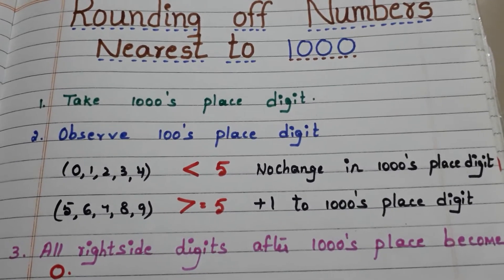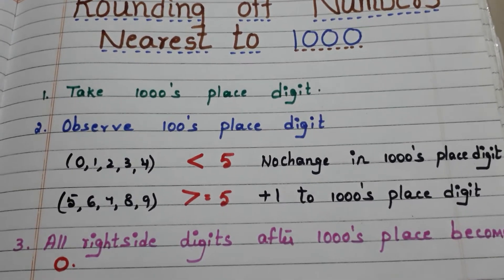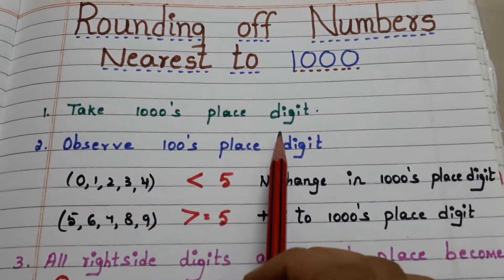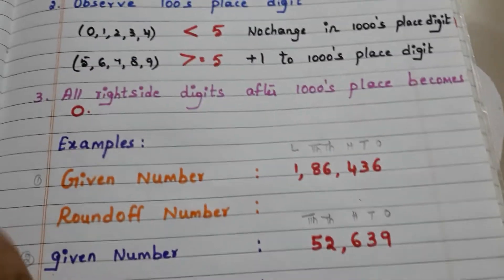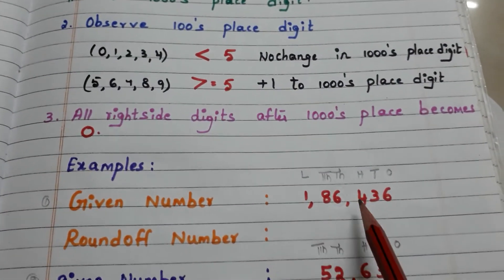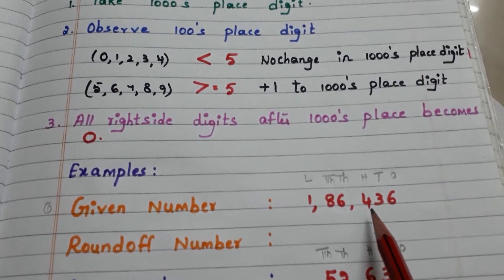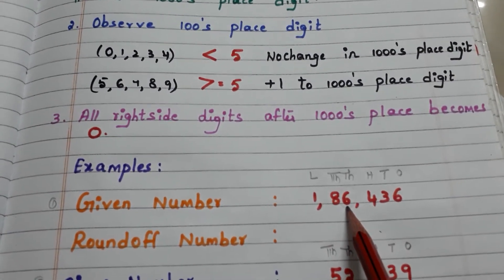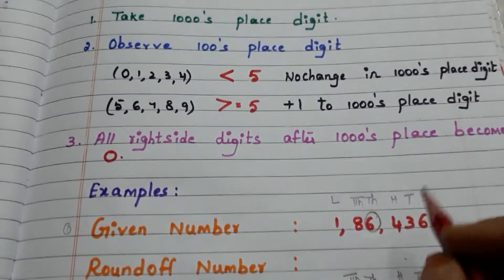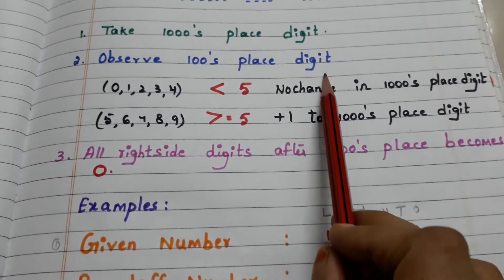Let us see those three steps with examples. The first step is to take the thousands place digit and circle it. Here we have one lakh eighty-six thousand four hundred and thirty-six. In this number, the thousands place digit is six, so circle it.